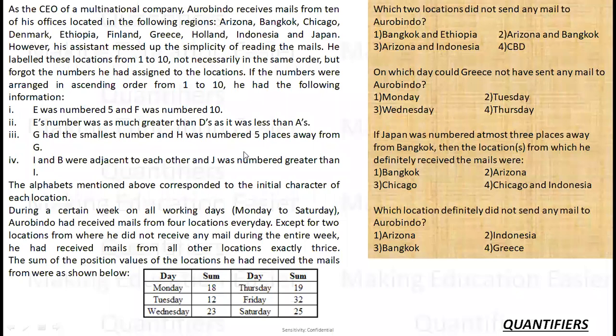The set is: As a CEO of a multinational company, Aurobindo receives mails from 10 of his offices located in the following regions: Arizona, Bangkok, Chicago, Denmark, Ethiopia, Finland, East Holland, Indonesia, and Japan. However, his assistant messed up the simplicity of reading the mails. He labeled the locations from 1 to 10, not in any particular order. So there were 10 locations, he had a name for 10, but there was no number fixed.